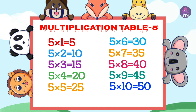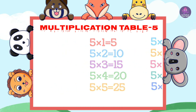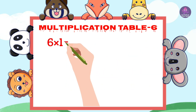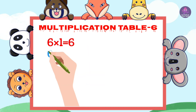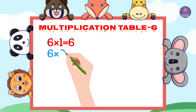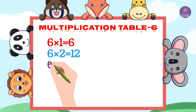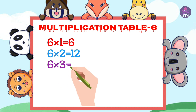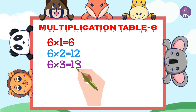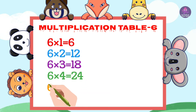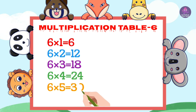6 1s are 6, 6 2s are 12, 6 3s are 18, 6 4s are 24, 6 5s are 30.